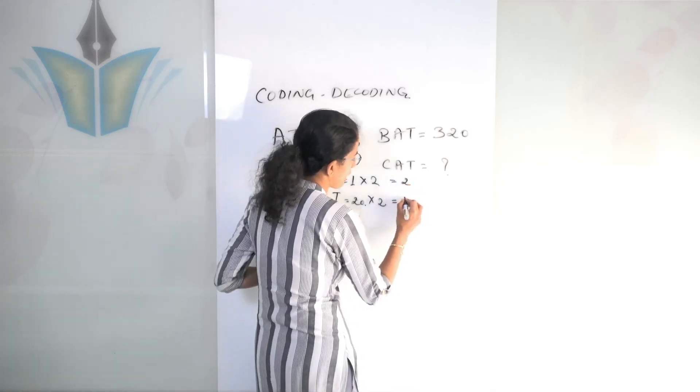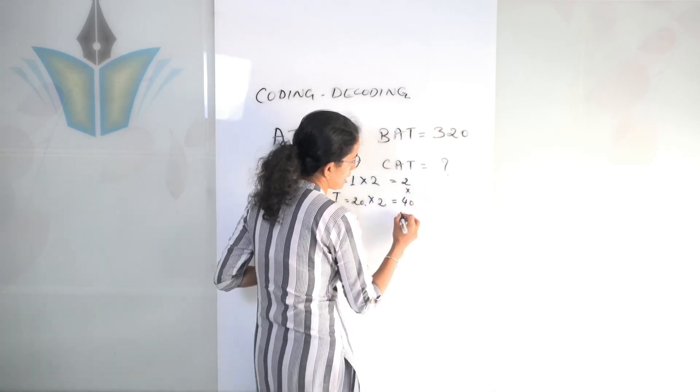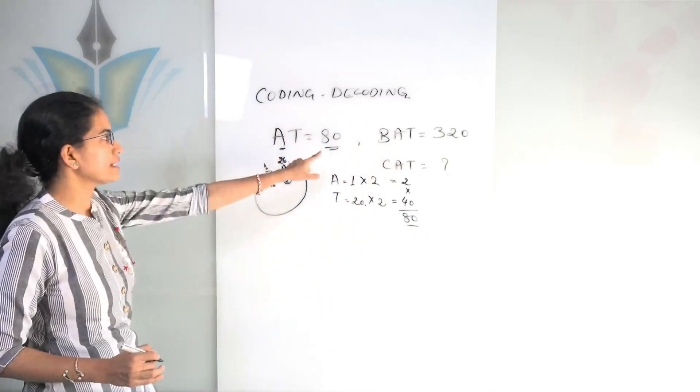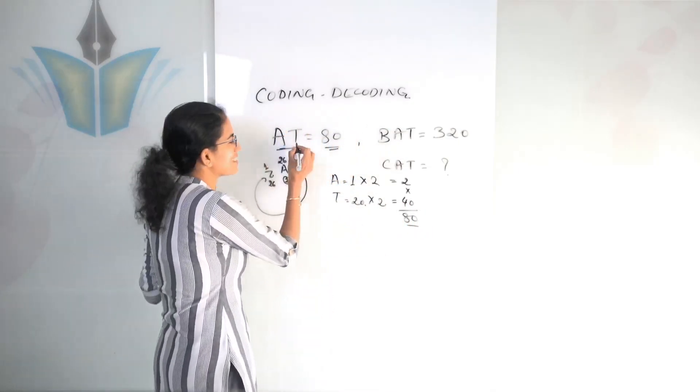So I get 2 and 40, and then I multiply these two again and I get 80. So AT is equal to 80.